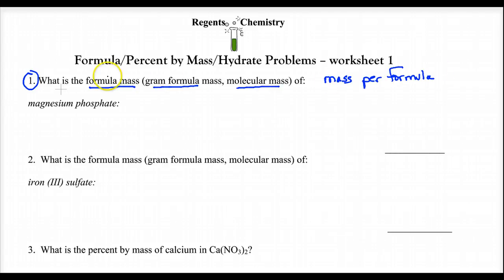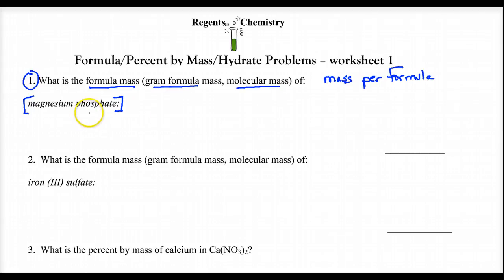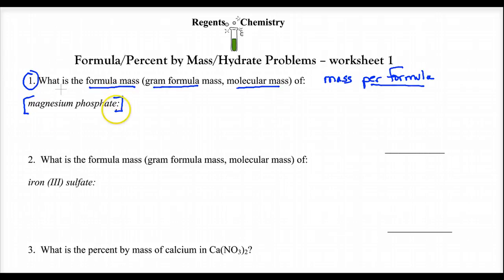What we want to do with a formula mass is find the mass of one of these compounds — or molecules or particles. These are ionic compounds, not molecules, but what's the mass of one formula unit? The formula isn't given, so we have to go back to our chemical formula writing. Before I can find the mass, I need the formula.